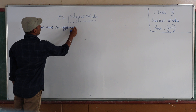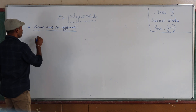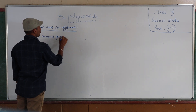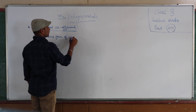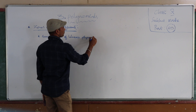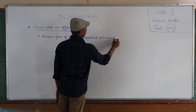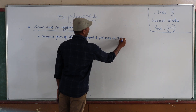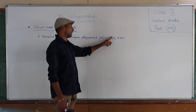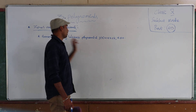Before that, I just want to explain the general form of a linear polynomial. The general form is: p(x) = ax + b, where a ≠ 0. Because the power of x is 1, when the highest power of the given polynomial is 1, it is called a linear polynomial.